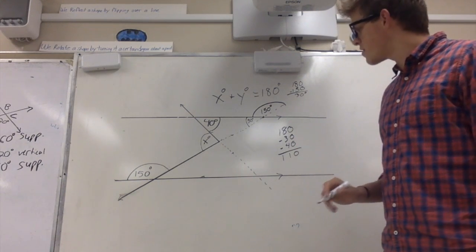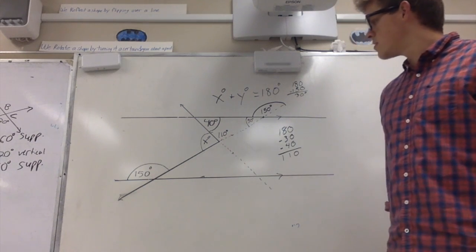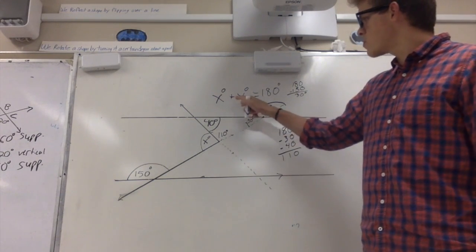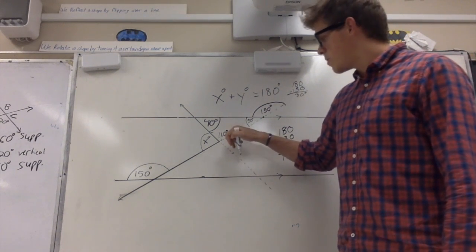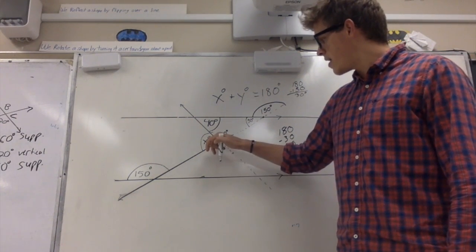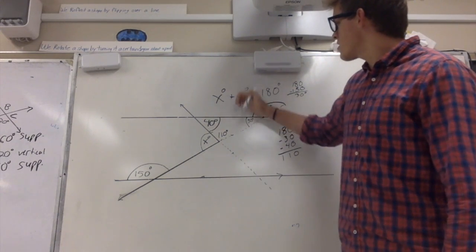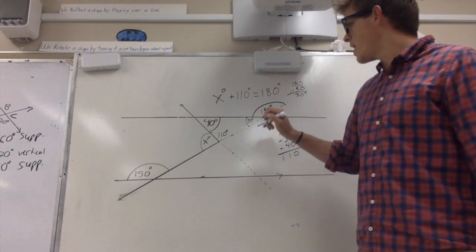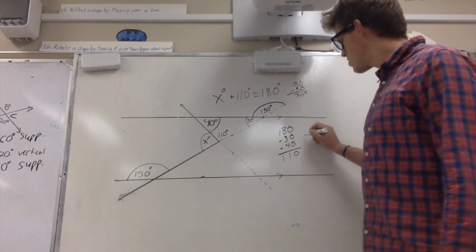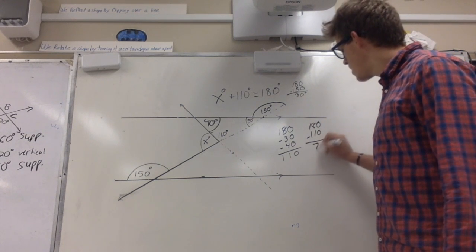110 degrees. So that right there is going to be 110 degrees. Like we said before, x degrees plus y degrees equals 180. This is my y. So if I now change it to x degrees plus 110 equals 180, we can come out to 180 minus 110 equals 70. So this equals 70 degrees.